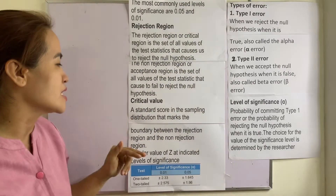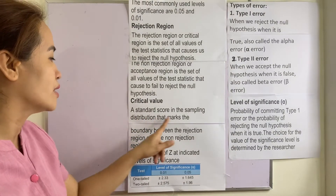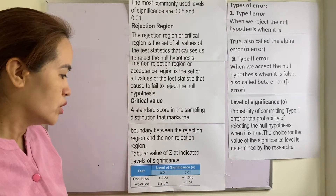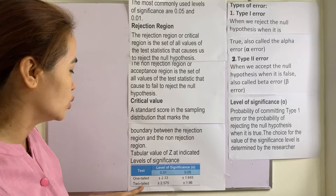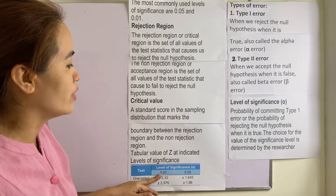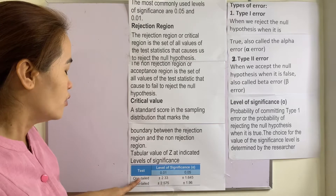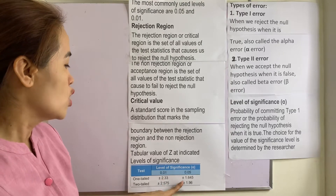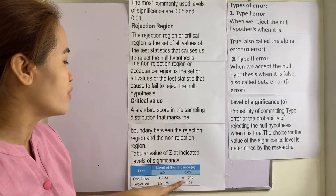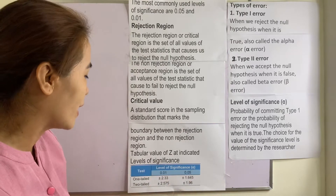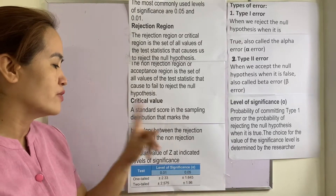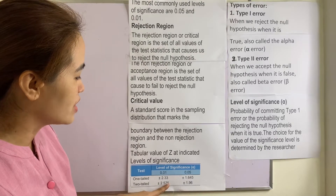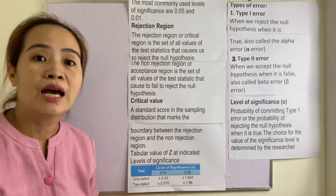The critical value is a standard score in a sampling distribution that marks the boundary between the rejection region and the non-rejection region. For a one-tailed test at the 0.01 level, the critical value is positive or negative 2.33 using the normal curve or Z distribution. For 0.05, we have positive or negative 1.645. For two-tailed, the critical values are positive or negative 2.575 at 0.01, and positive or negative 1.96 at 0.05.